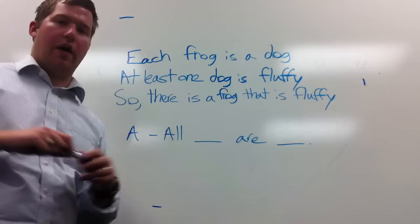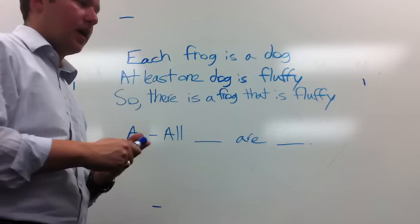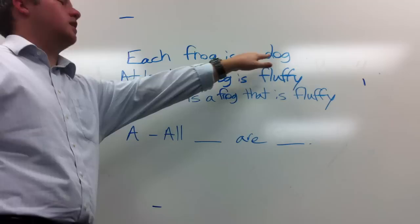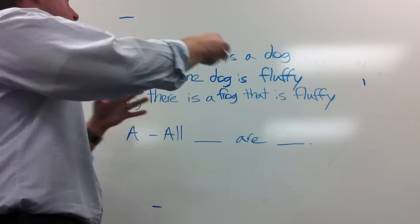You have to make sure each statement is in one of the four primary forms: an A statement, E statement, I statement, or O statement. Those are the only types of statements we can deal with. So let's look at the first example: 'each frog is a dog.' What's it trying to say? Well, everything that is a frog is a dog — all frogs are dogs. Not too complicated.